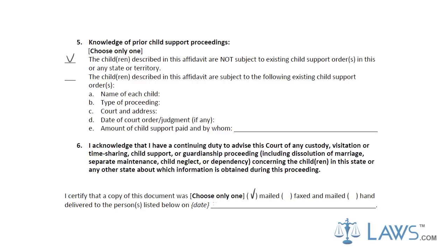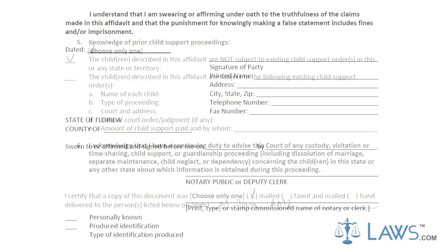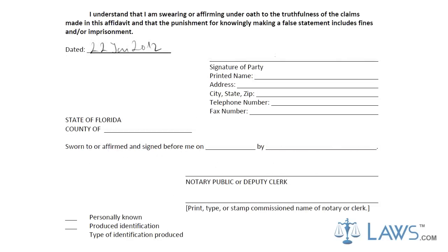In Section 5, state whether previous child support proceedings have taken place. If they have, you must provide information about those previous proceedings. Certify that a copy of the petition has been provided to the respondent and state how it was sent to them.